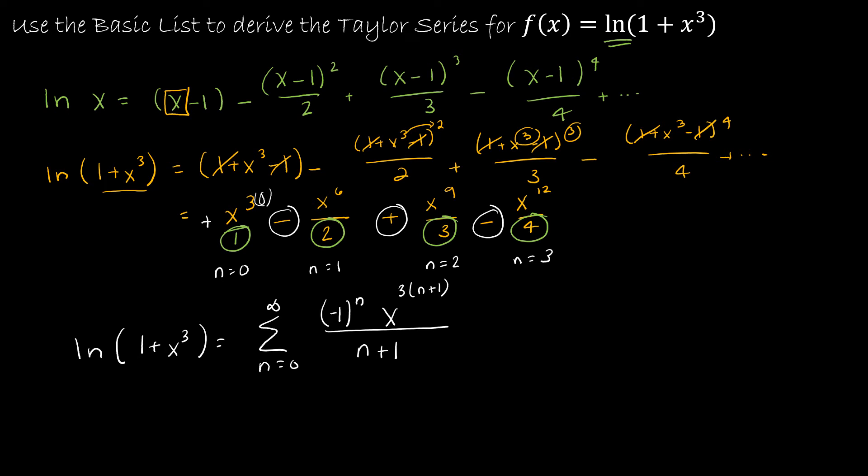Now I could also write this, because obviously I've increased n by 1 here and increased n by 1 here. So another equivalent way to write this is I could have said this is equal to the summation as n goes from 1 to infinity, and then all of my powers of n would just decrease by 1. So this would be n minus 1, then x to the 3n over n. Those are the same answer and they're both just fine. I tend to like to start the series at 0, so this is the way that I would write the solution.